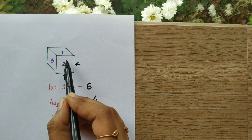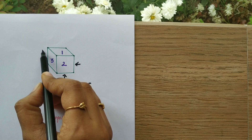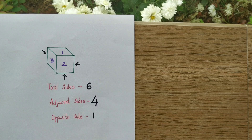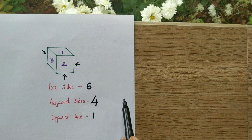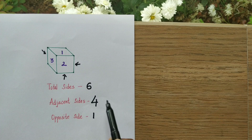How many opposite sides does it have? Let's consider two again — the opposite side will be in this direction, so it will be one. So totally we have six sides, four adjacent sides for any particular number, and one opposite side for that number. Adding that particular number — which is two here — we get six total.